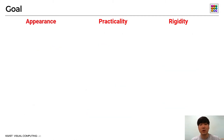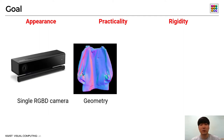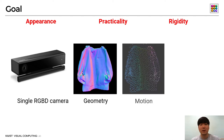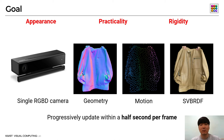In this work, we aim to capture the geometry and appearance of a moving 3D object with a practical setup. We use a single RGB-D camera to acquire the 3D object's geometry, its motion, and its SVBRDF, progressively updating them within a half-second per frame by means of GPU.